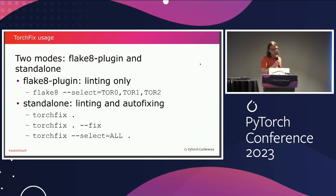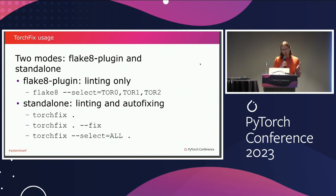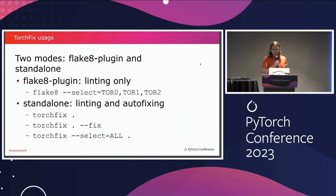There are two modes to run TorchFix. One mode is a Flake8 plugin and another is standalone. In Flake8 plugin mode, you just install TorchFix and then use Flake8 normally. This is very convenient if you already use Flake8 in your project — if you have Flake8 running in your CI, you just install TorchFix and specify the additional warnings you want to handle. However, in this mode there are no autofixes, only linting and error reporting.